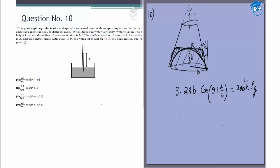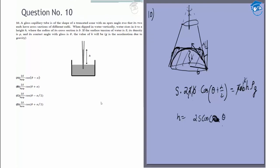From that you can get the value of h. That will be: b cancels with this, so 2S cos(theta + alpha/2) divided by bρg, which is option D. So the answer to this question is option D. Thank you.